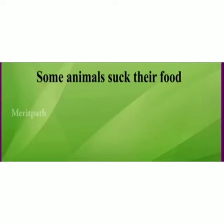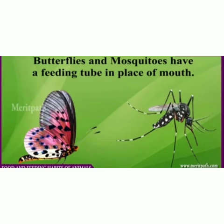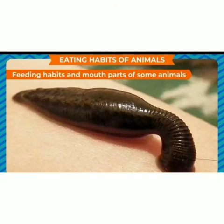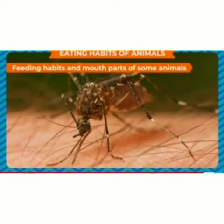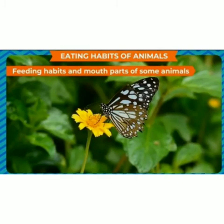Some animals have a sucking tube like a straw. Examples of these types of animals are leech, mosquito, and butterfly. Leech and mosquito suck blood from animals or human beings. Butterfly sucks nectar from flowers.